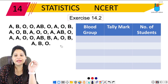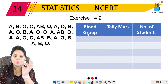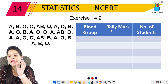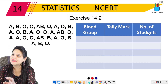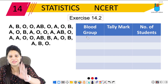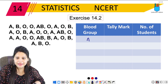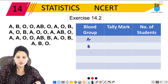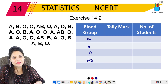So this is our data. We will set up the table like this. We will write 'Blood Group', then the tally marks column, and then 'Number of Students'. So our blood groups are A, B, O, and AB.